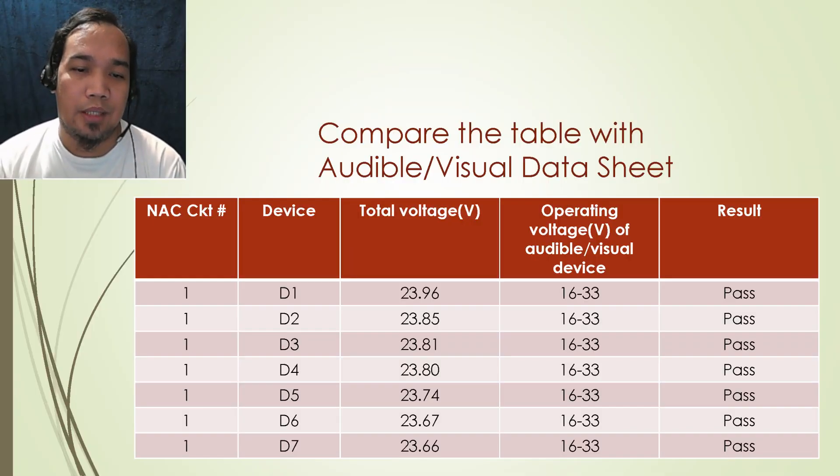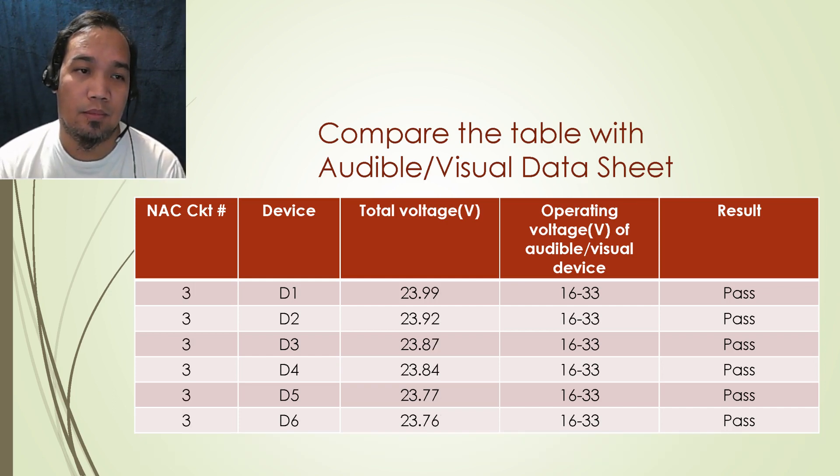By comparing this value with the operating voltage of the fire alarm horn strobe in data sheet, if it's less than the operating range, then the design is passed or in compliance with the manufacturer's recommendation. And that's how we calculate the voltage drop.